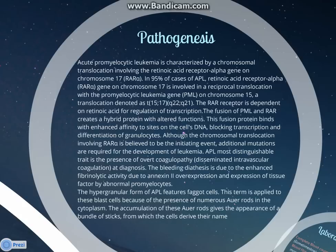Although the chromosomal translocation involving RAR-alpha is believed to be the initiating event, additional mutations are required for the development of leukemia. Acute promyelocytic leukemia's most distinguishable trait is the presence of coagulopathy at diagnosis. The bleeding diathesis is due to enhanced fibrinolytic activity from annexin II overexpression and expression of tissue factor by abnormal promyelocytes. The hypergranular form features faggot cells — blast cells with numerous Auer rods in the cytoplasm — whose accumulation gives the appearance of a bundle of sticks.